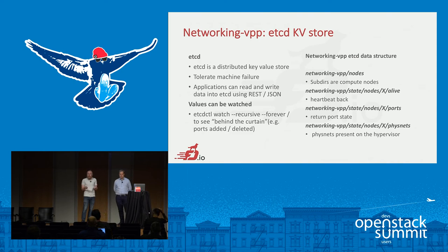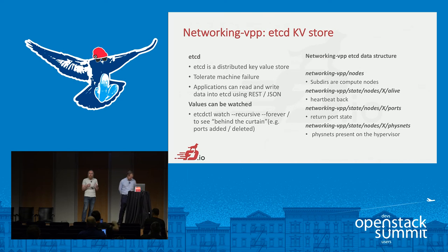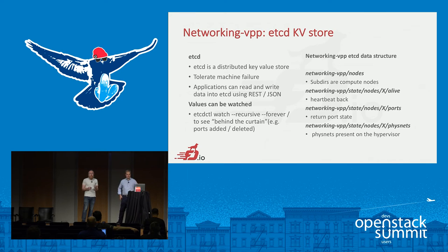Debugging was a side effect we didn't expect but are very happy about. If you've ever tried to work out what OVS is thinking when debugging Neutron — there are about four different ways OVS gets its properties, plus all the IP tables — it's a horrible, miserable experience. In this instance, ETCD contains a breakdown of what you're trying to configure, what you want VPP to be doing. You can compare the VPP state using its CLI against what you're seeing in ETCD, and you can see whether it's sensible or whether you've got a bug. We're also looking at adding debugging and checking code to write a script that pulls both and compares them to see whether everything is working properly.